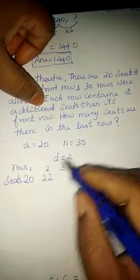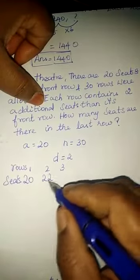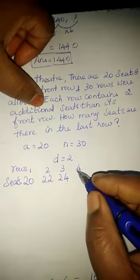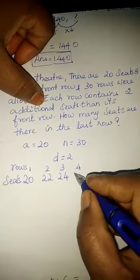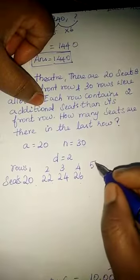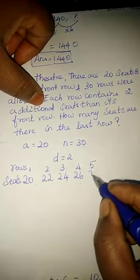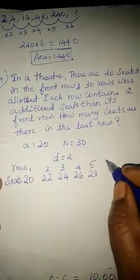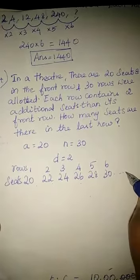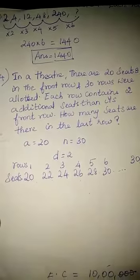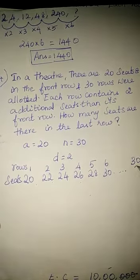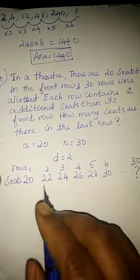Then third row contains two additional seats when compared to the front row, that means 24. Then fourth row contains two additional seats when compared to the third row, 26. And the fifth row contains two additional seats when compared to the fourth row, that is 28. And then sixth row contains two additional seats when compared to the front row, it's 30, and so on. Up to we have to find 30 rows, on the 30th row what's the total number of seats in a row we have to find.